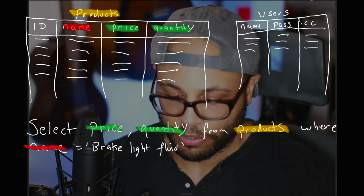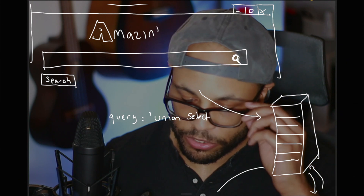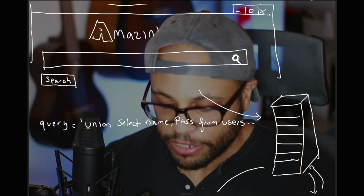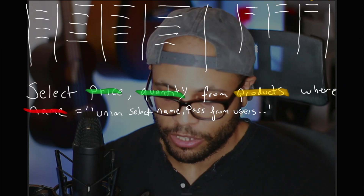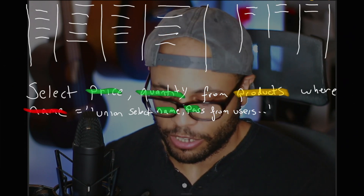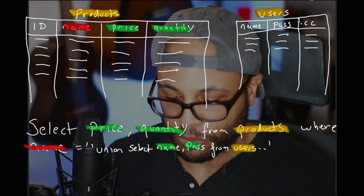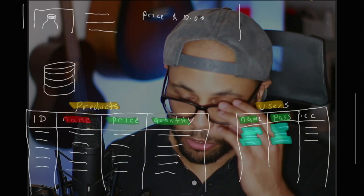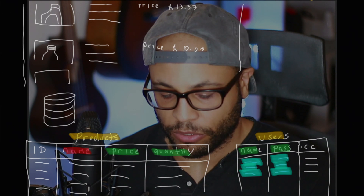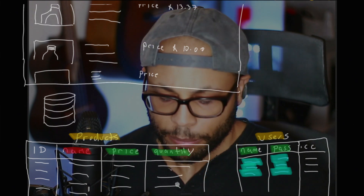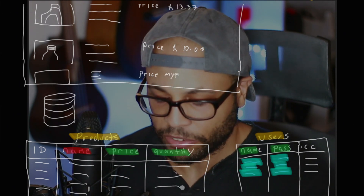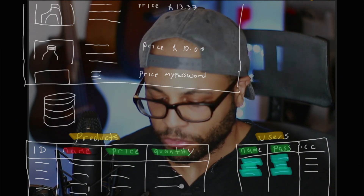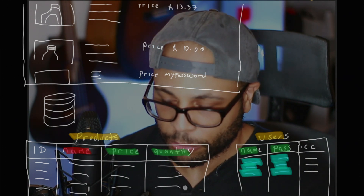In poorly written applications, by changing what we're searching for to include SQL, we can change the actual query used to search the database. Here we use a UNION SELECT to bring back data not just from the products table but from the users table as well. Since the application displays whatever is returned from the database, it displays the extra row as a product — showing us the password.